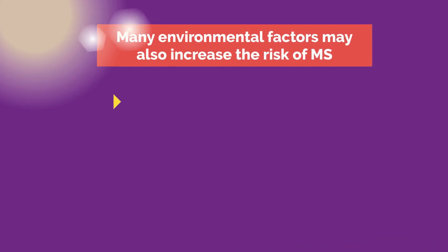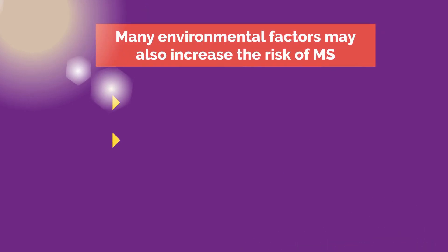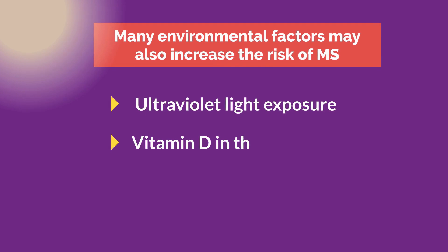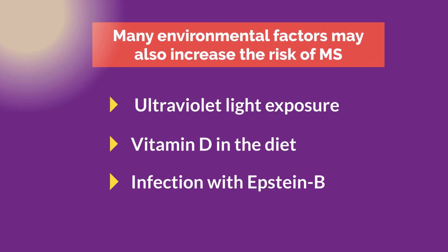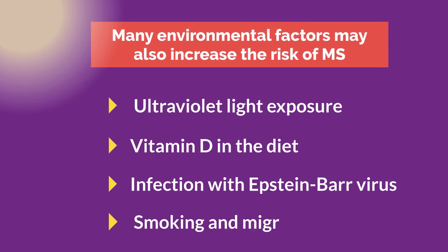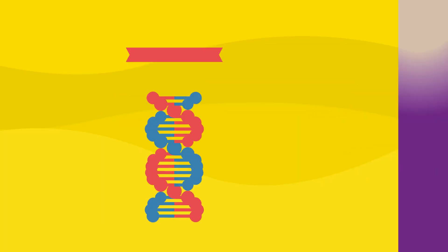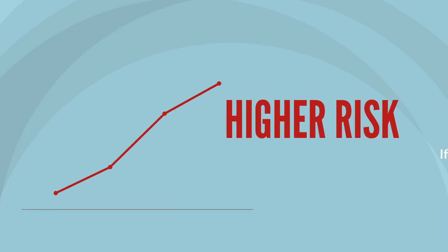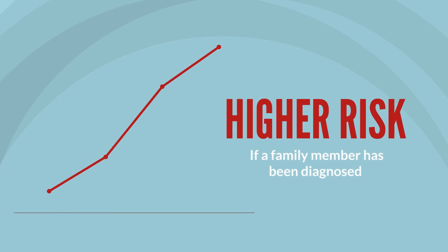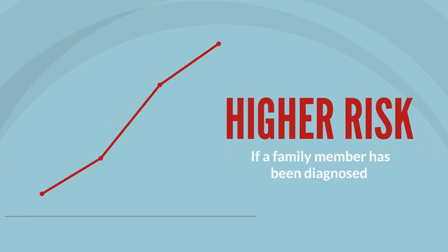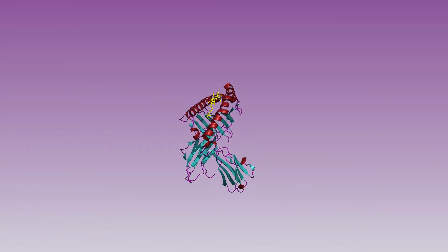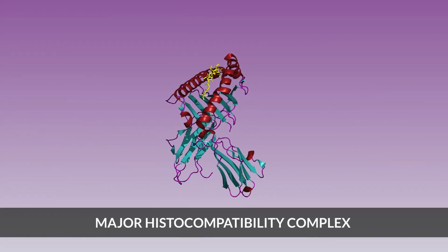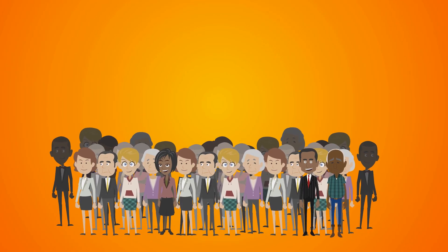Many environmental factors may also increase the risk of MS, including low levels of ultraviolet light exposure, lack of vitamin D in the diet, infection with Epstein-Barr virus, smoking, and migration. Genetics also play a role. Although people have a higher risk if a family member has been diagnosed, no causative gene has been found. Genes that code for a component of immune cells called the major histocompatibility complex are variable between populations and races.